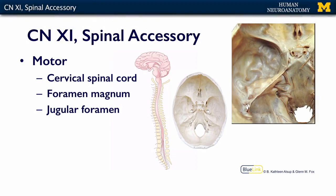The spinal accessory nerve has an unusual course. The cell bodies of origin are within the cervical spinal cord. So the axons leave the cord, come up through the foramen magnum — which is where the brainstem goes through — so your spinal cord on one side and brainstem on the other.